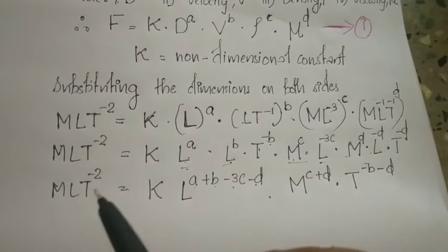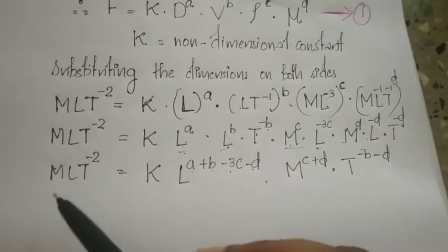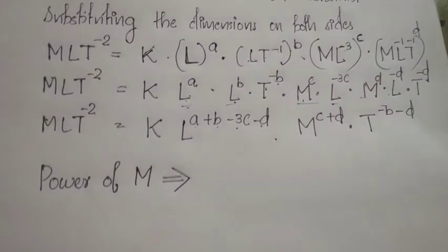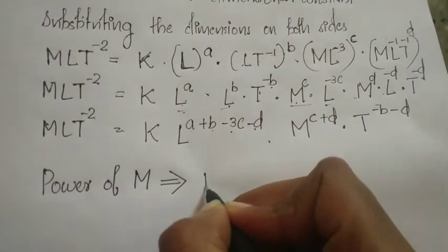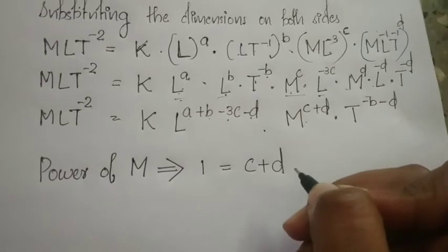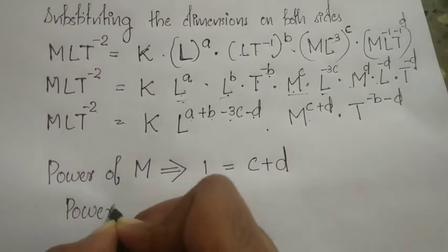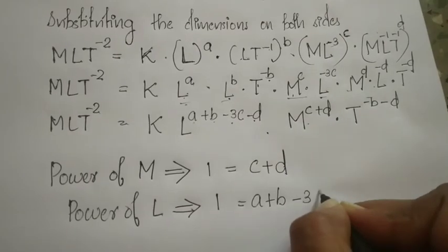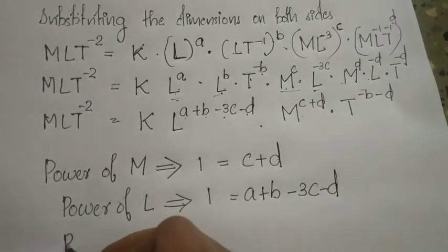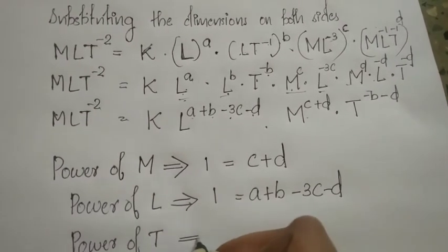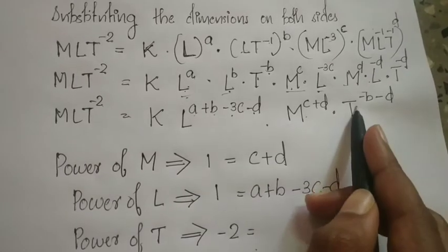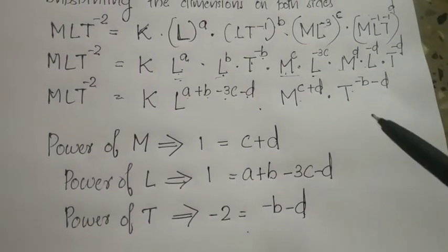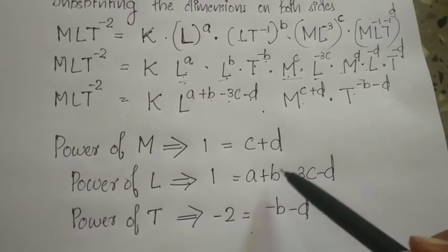Equating the powers on left-hand side and right-hand side: power of M gives 1 equals c plus d. Power of L gives 1 equals a plus b minus 3c minus d. Power of T gives minus 2 equals minus b minus d.